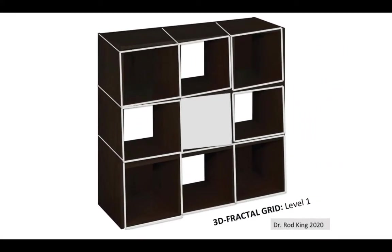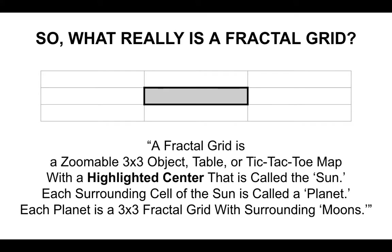A fractal grid at level 1 consists of a box of boxes. You can call this a tic-tac-toe box in that it generally looks like a tic-tac-toe board, but the center is highlighted, and that is what makes it unique as a fractal grid. A fractal grid can be described as a zoomable 3x3 object, table, or tic-tac-toe map with a highlighted center.